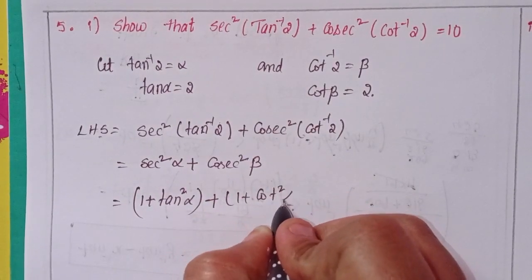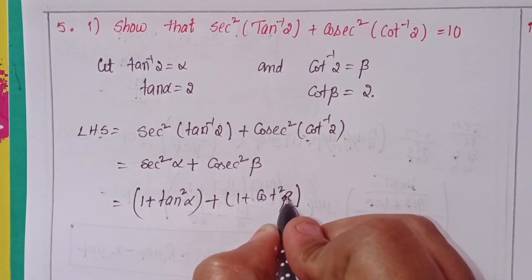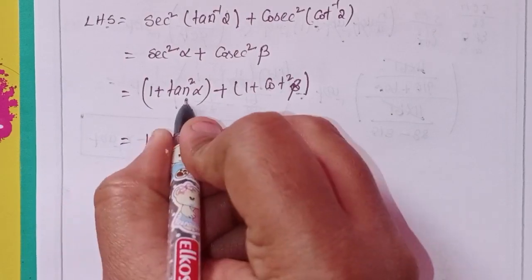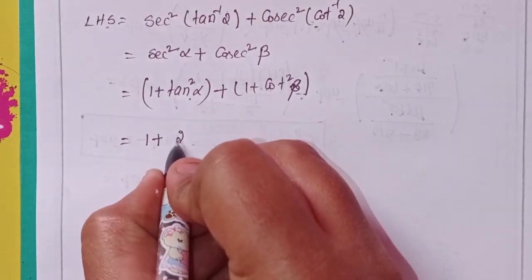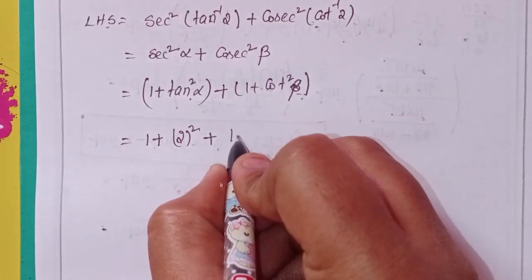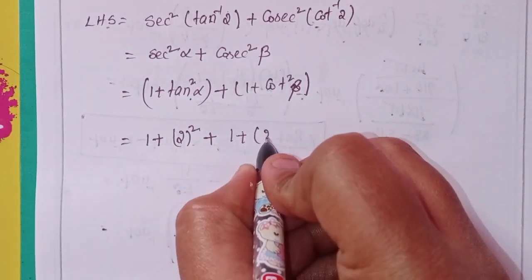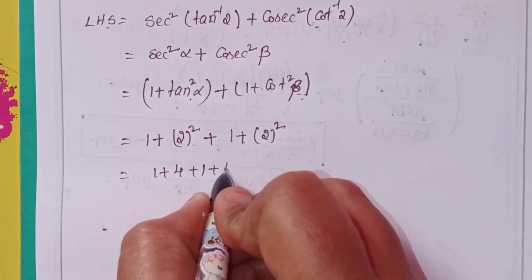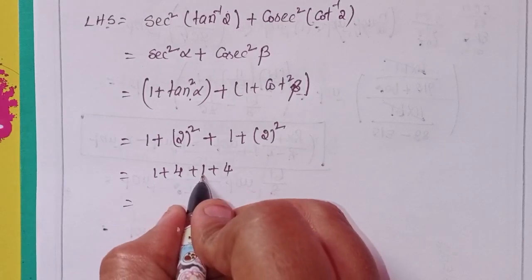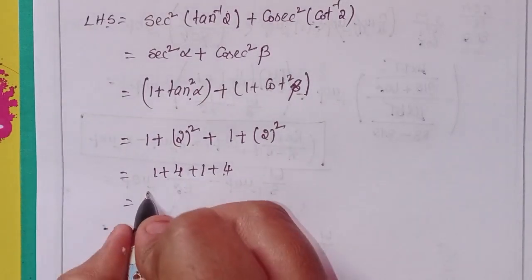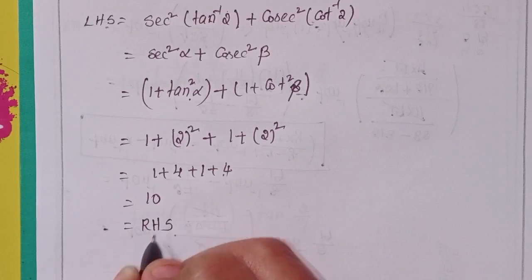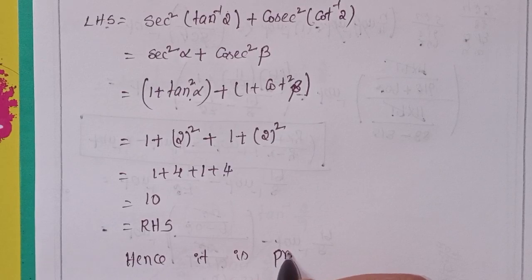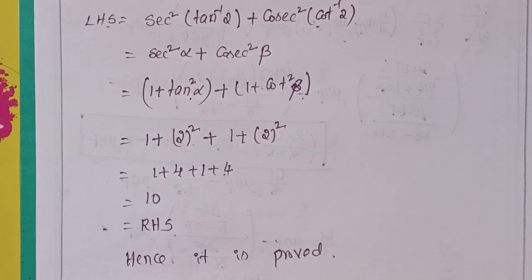Using the identities: 1 + tan²α where tan α = 2, so 2² + 1 = 5. Plus 1 + cot²β where cot β = 2, so 1 + 4 = 5. Total: 5 + 5 = 10, which is the RHS. Hence it is proved.